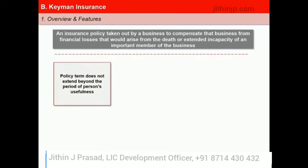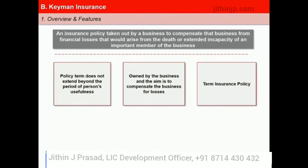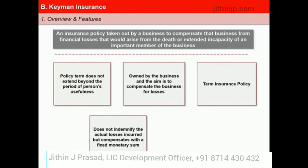The key features of Keyman Insurance are: First, the policy's term does not extend beyond the period of the key person's usefulness to the business. Second, it is usually owned by the business, and the aim is to compensate the business for losses incurred with the loss of a key income generator and facilitate business continuity. Third, it is a term insurance policy where the sum assured is linked to the profitability of the company rather than the key person's own income.